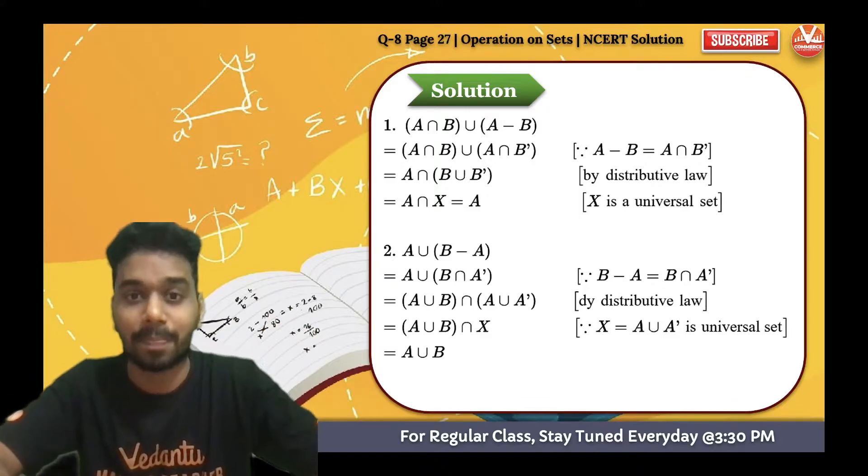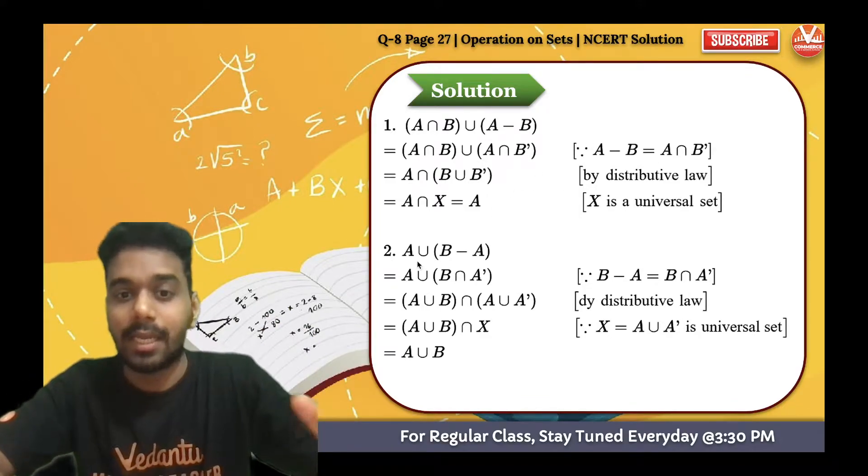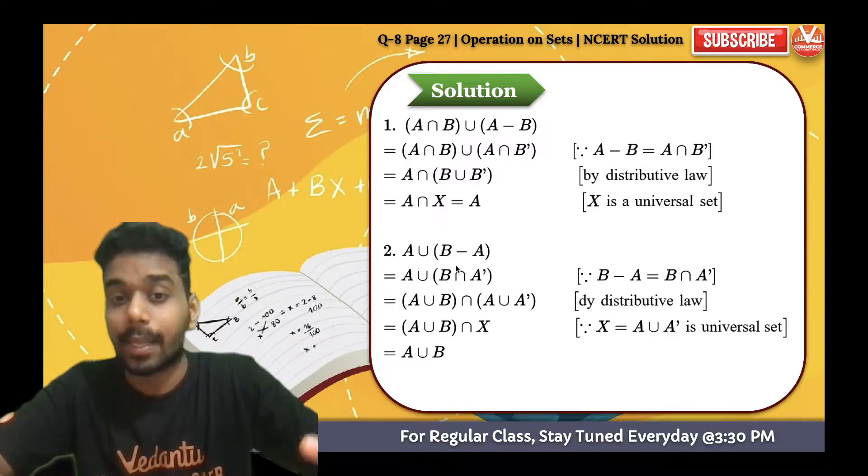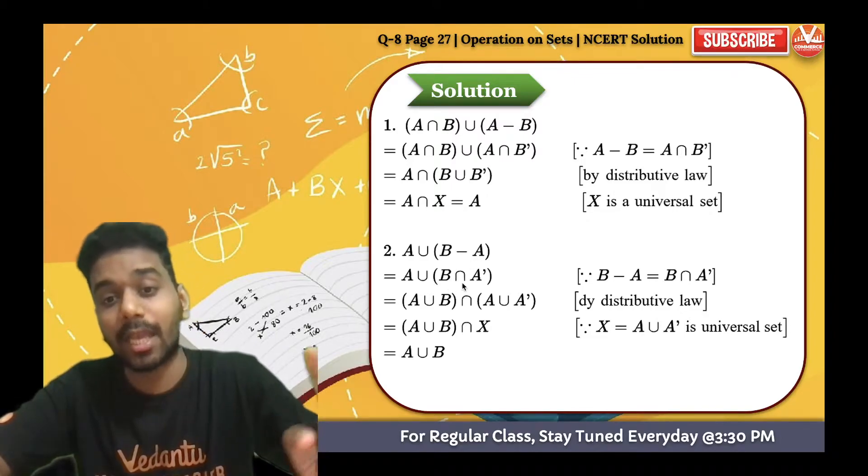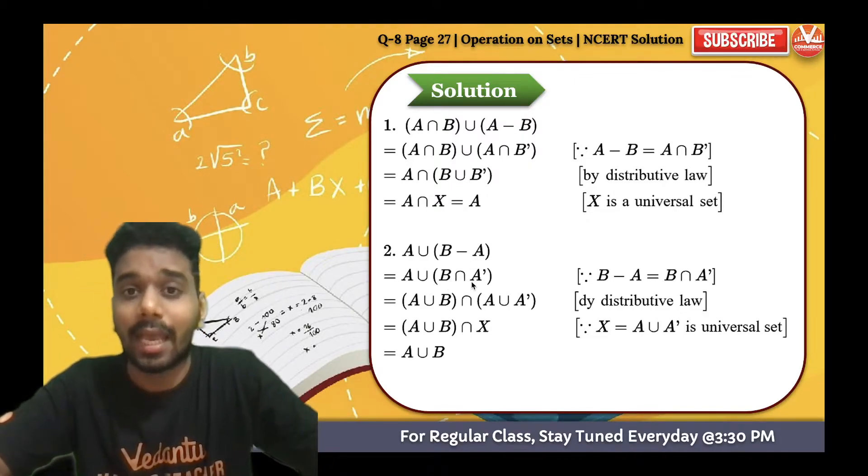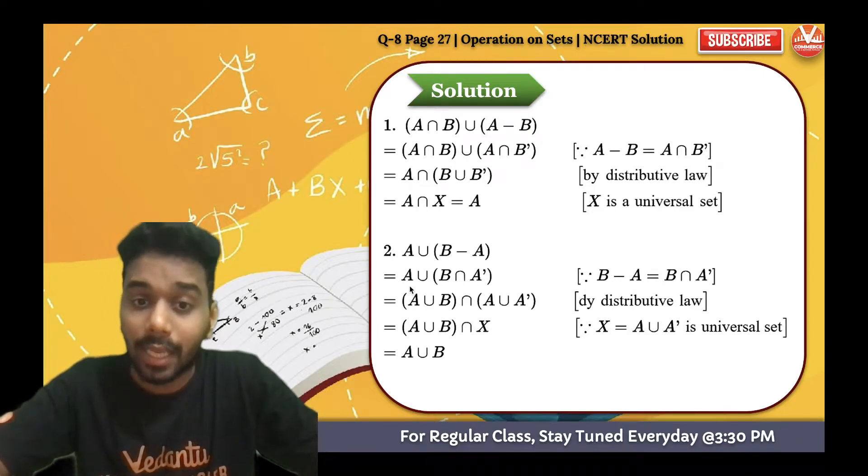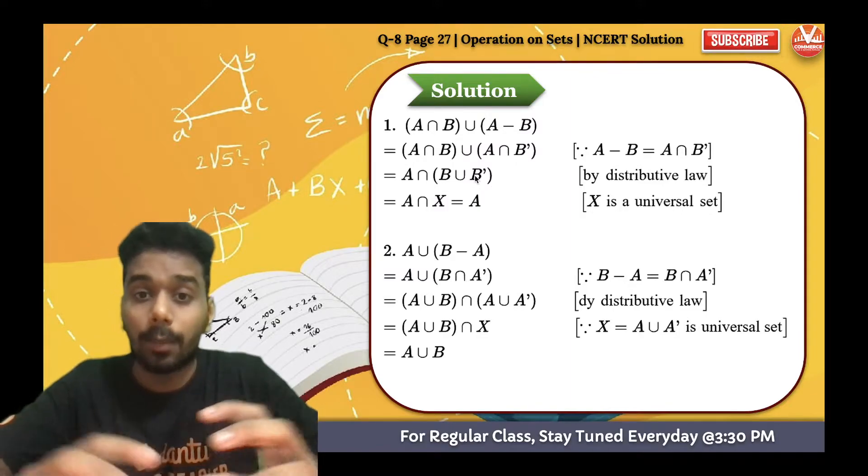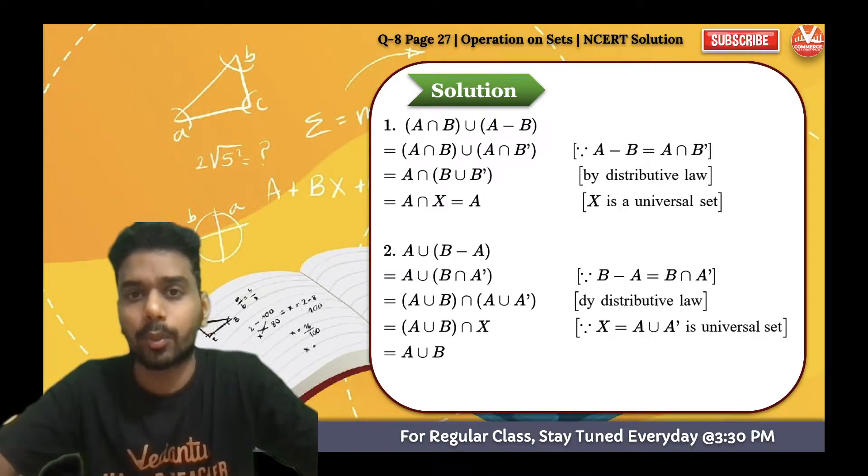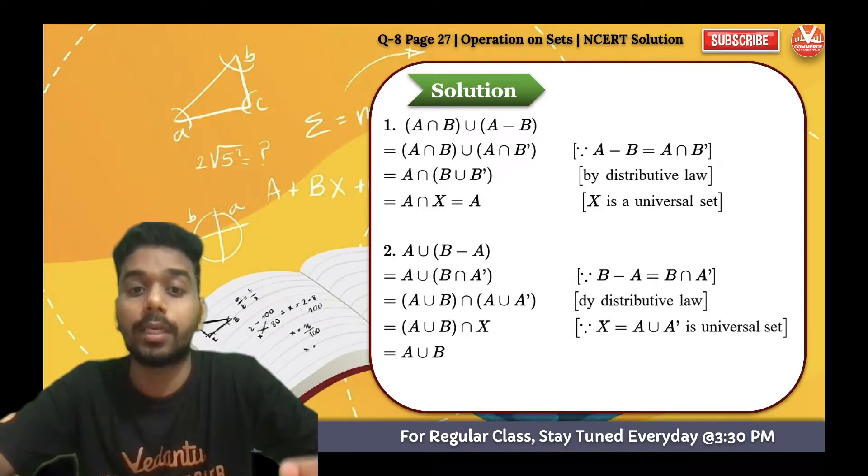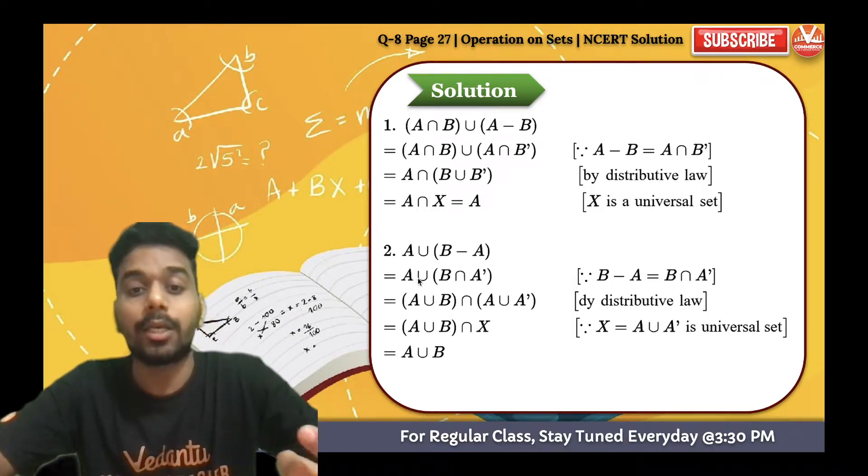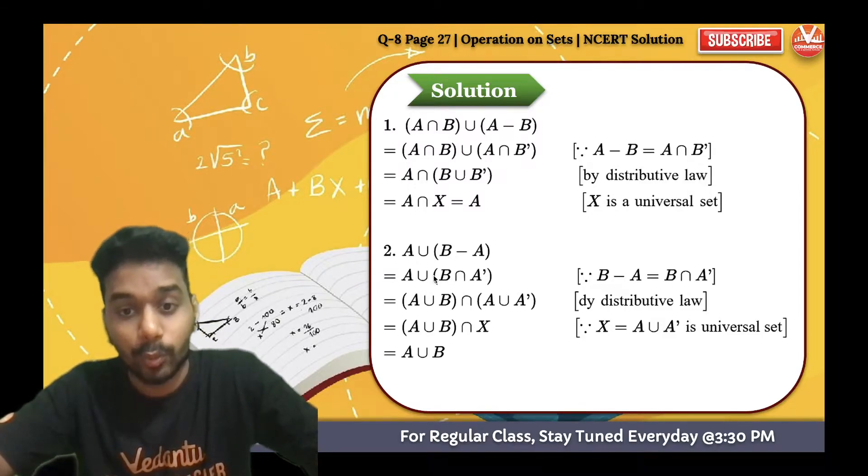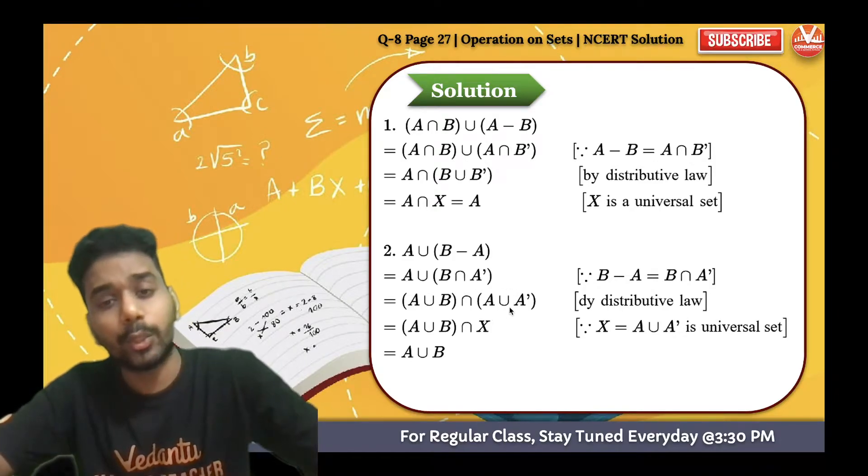In the next question, A union B minus A. So first of all we will convert it. B minus A is B intersection A not, okay? Other than A is A not. Now over here, A union B intersection A. In this question, you are basically associating or distributing same things. Now you will distribute over here: A union B, and then intersection A union A dash.